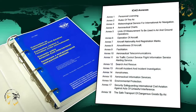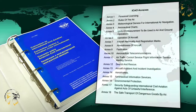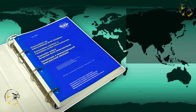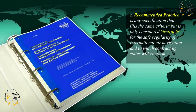These aims are achieved by ensuring that member states comply with the standards and recommended practices that have been issued by the Air Navigation Commission. A standard is anything which is considered necessary for the safe regularity of international aviation, and to which contracting states will conform. Whereas a recommended practice is anything which is considered desirable, as opposed to necessary, for the safe regularity of international aviation, and to which contracting states will endeavour to conform, as opposed to will conform to.